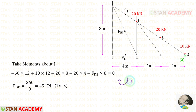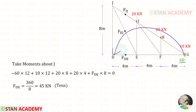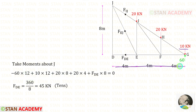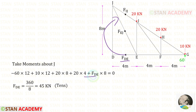Let us keep clockwise as positive and anticlockwise as negative. 60 is acting in the anticlockwise direction, so it will be negative and the distance is 12. These three loads are acting in the clockwise direction, so all of them will be positive. For 10, the distance is 12; for 20, the distance is 8; and for this 20, the distance is 4. Fde is acting in the clockwise direction so it will be positive and the distance is 8. For Fde, we will get a positive value, meaning it is tensile.